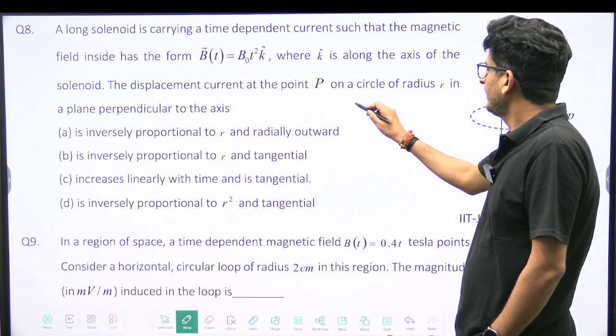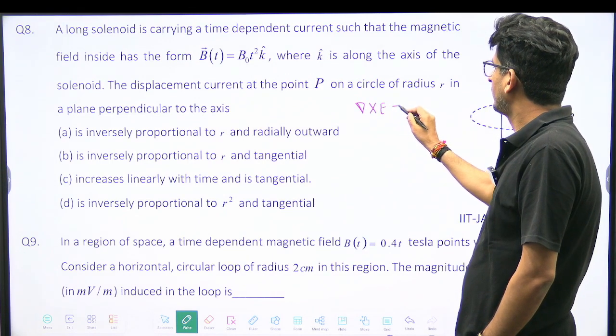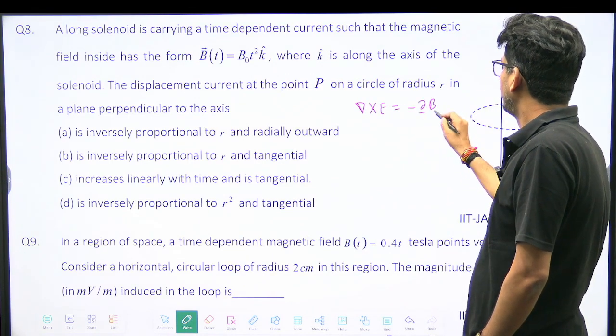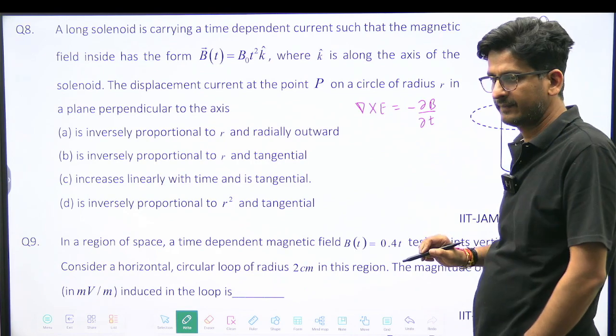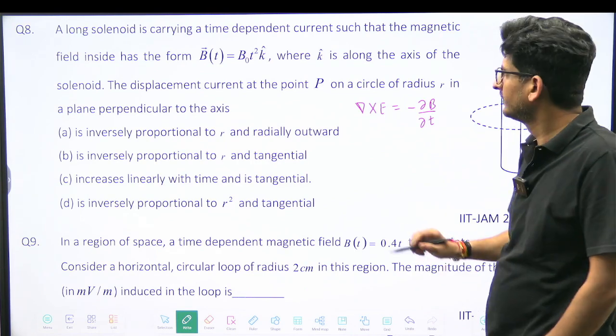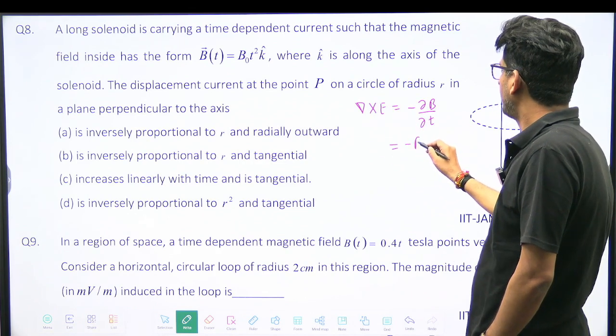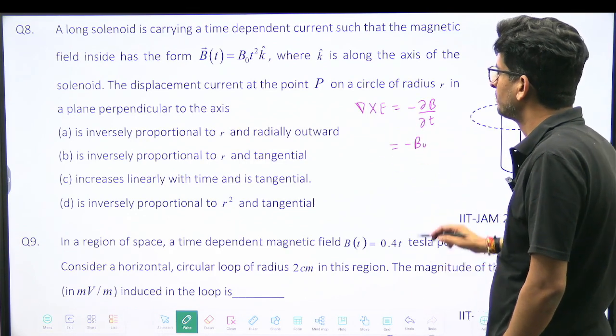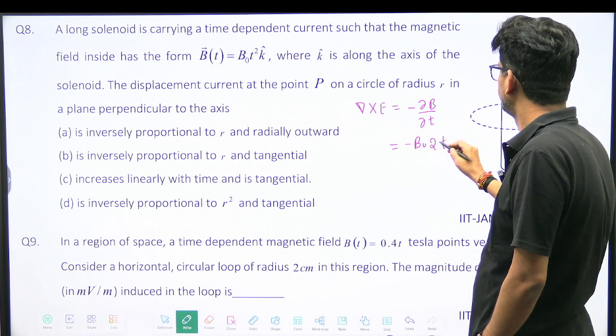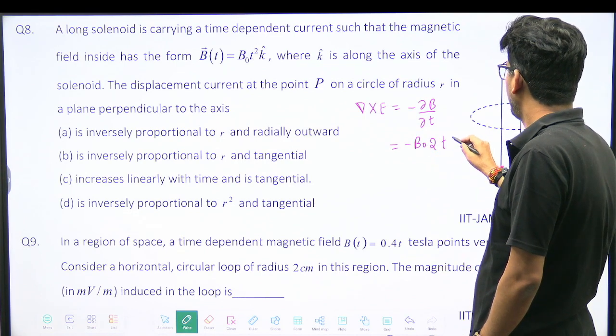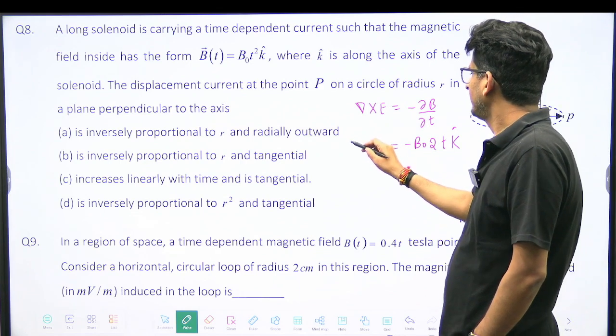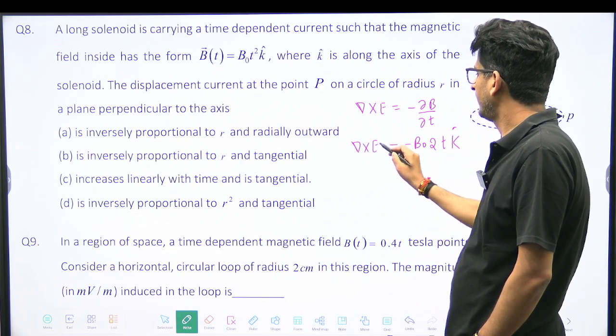So del cross E is equal to minus del B by del T. And what is minus del B by del T? It's minus B₀ 2T K̂, and this side is del cross E.